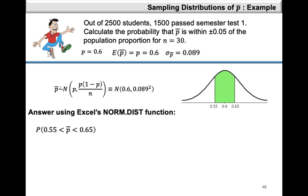Using Excel's NORM.INV function, A equals NORM.INV(0.9, 0.7, 0.072), which also gives 0.792. In general, when using the NORM.INV function, the first entry is the area to the left which is the given probability, the second entry is P which is the proportion equal to the mean of P-bar, and the final entry is sigma P-bar which is the standard deviation of P-bar.